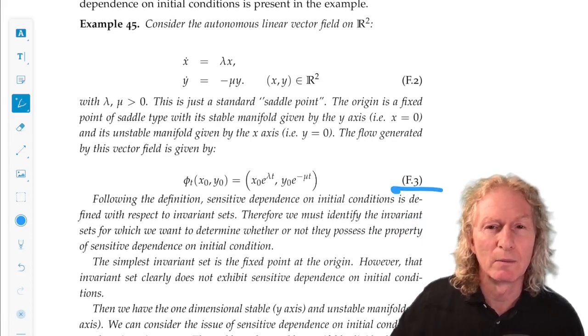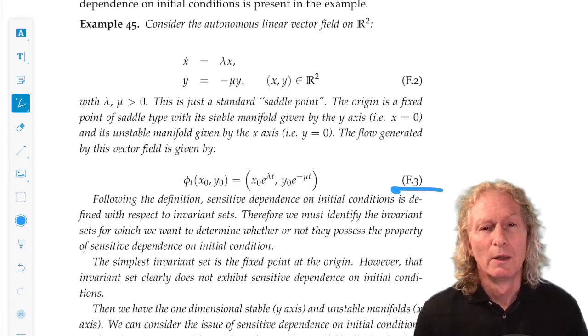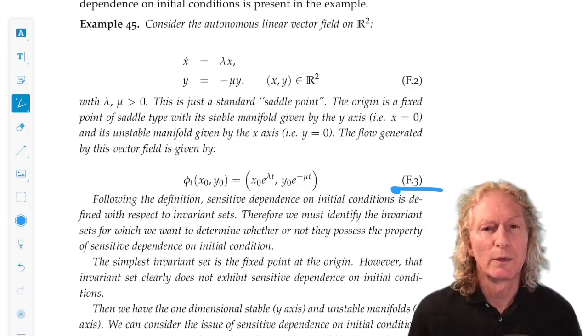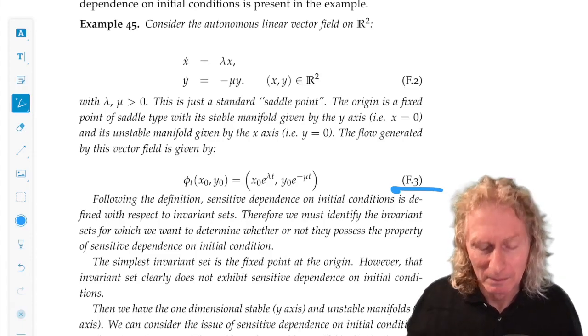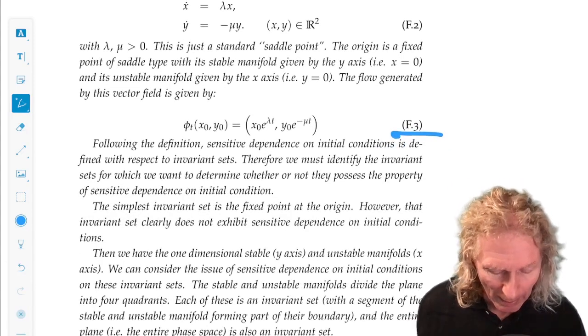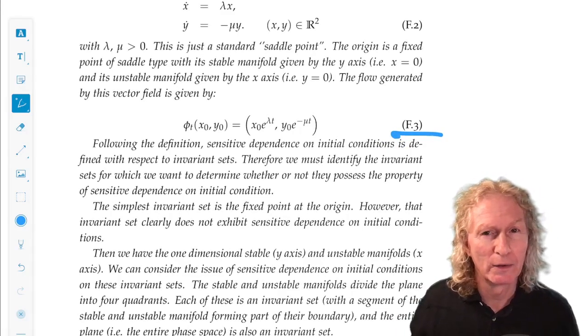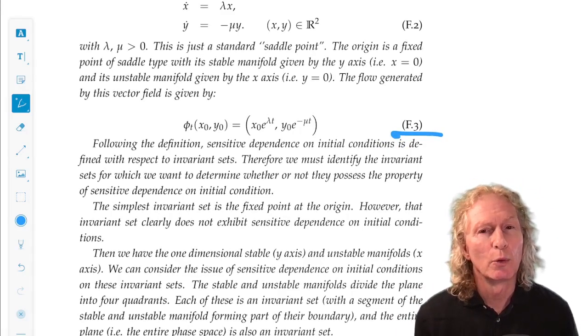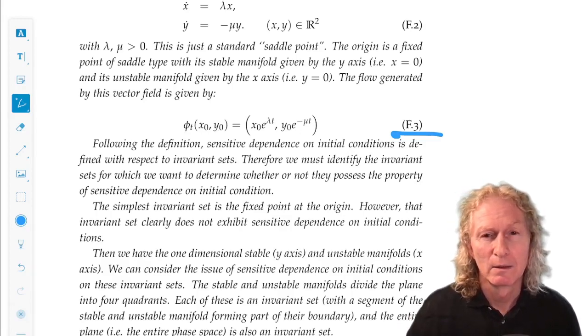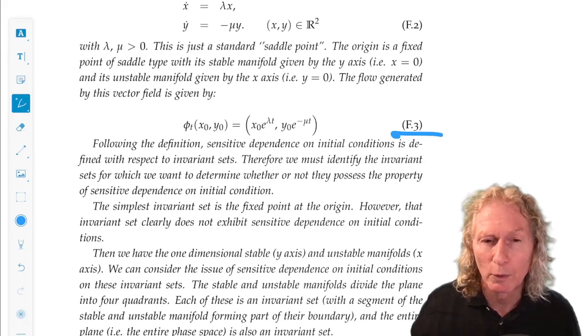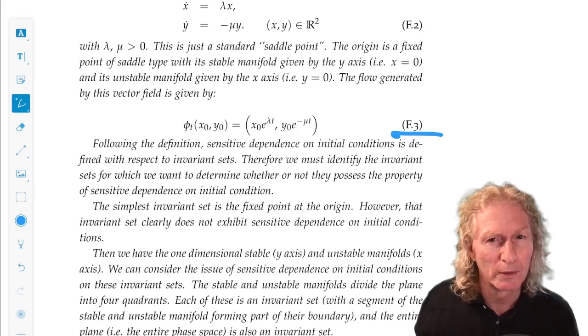We need to identify an invariant set. There's lots of invariant sets, you recall. So the simplest invariant set would be the fixed point at the origin. Not interesting. That's not chaotic. It just sits there. Then we have the stable manifold, the y-axis, where you take any two points on the y-axis. That's an invariant set. And they just evolve towards the origin. And they get closer and closer together. No sensitive dependence on initial conditions.